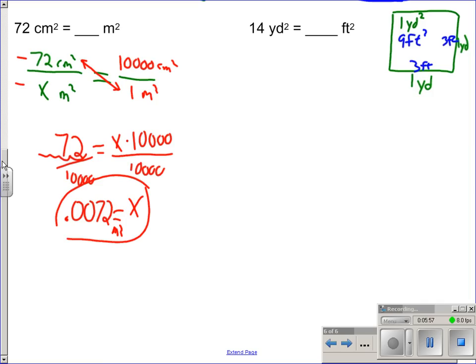Once we know that number, now we can start setting up our equal proportions: 14 yards squared over x number of square feet equals one square yard to nine square feet. Cross multiply.